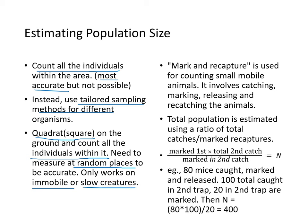For small mobile animals, there's the mark-and-recapture method: catch, mark, and release animals, then re-catch them. The total population is estimated using an equation involving the total number marked in the first catch, total caught in the second catch, and number of marked animals in the second catch. For example, if 80 mice were marked and released, and in the second catch 100 were caught with 20 marked, the population estimate is 80 times 100 divided by 20, or about 400.